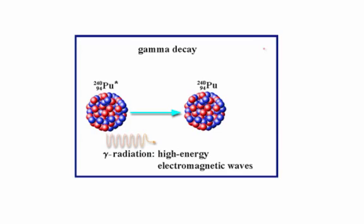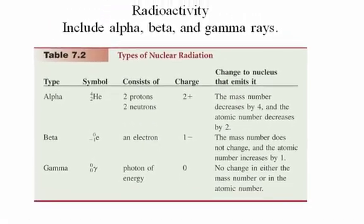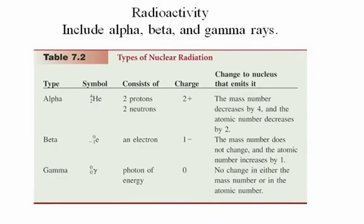Those are the three basic types of nuclear decay. There's other types, but those are the three most common types. It's summarized here in this table, the three types of irradiation.